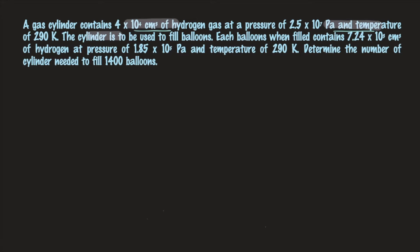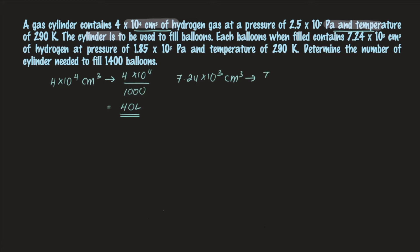We are going to start with the conversion of all the volumes. The first volume given in the question is 4×10⁴ cm³. Dividing by 1000, you get 40 litres. The other volume is 7.24×10³ cm³, which divided by 1000 gives 7.24 litres. This first value is for the whole cylinder and the second value is for one balloon.